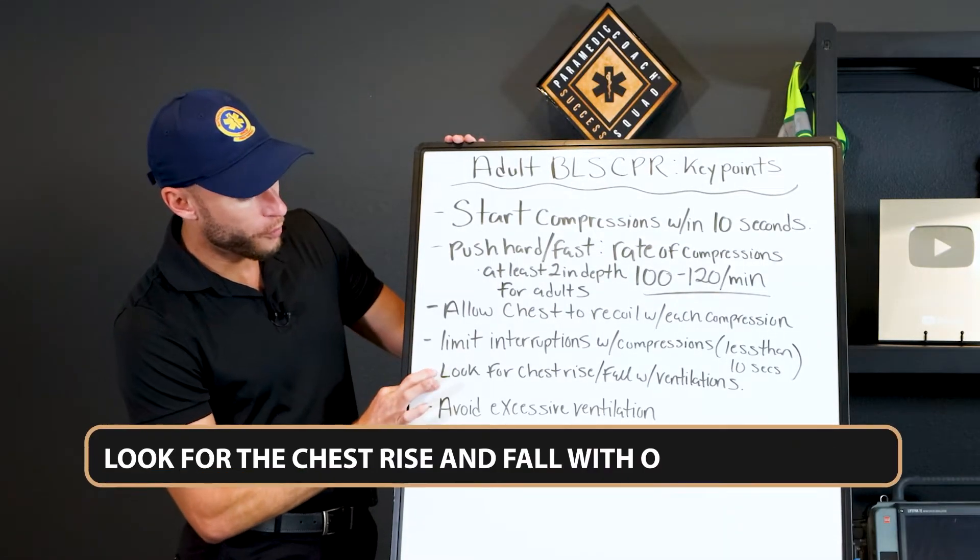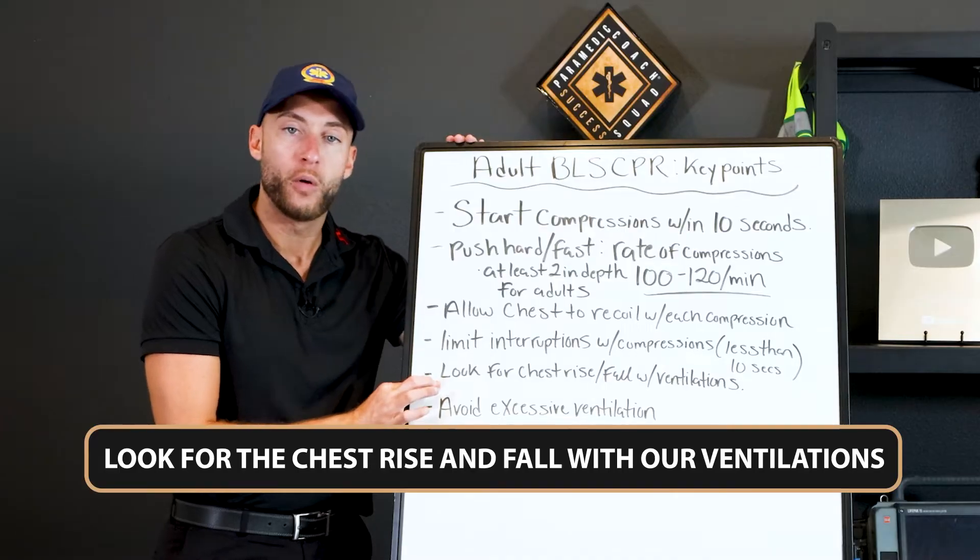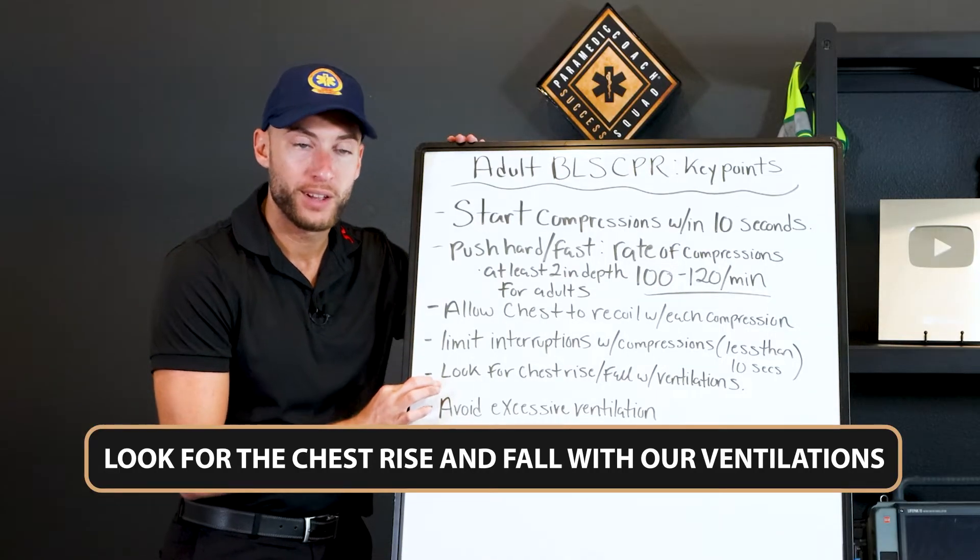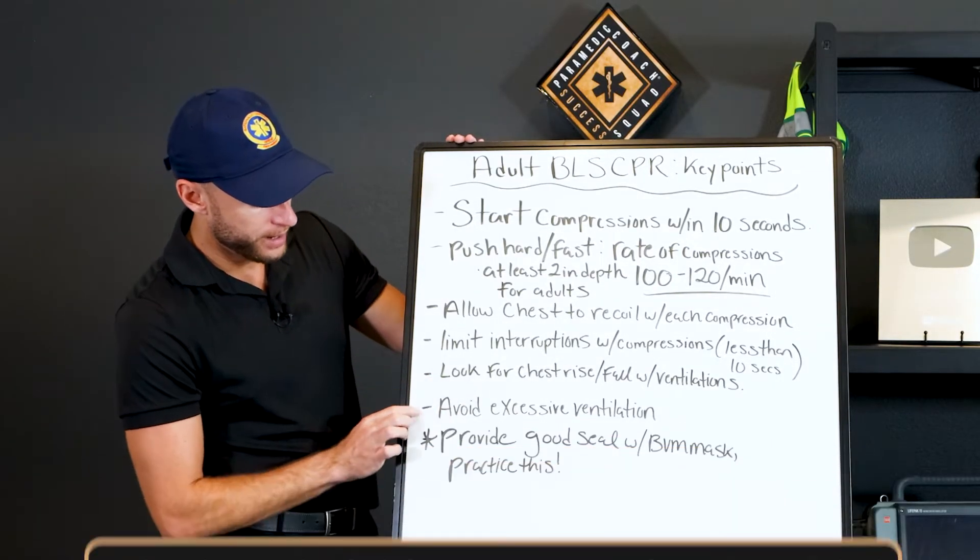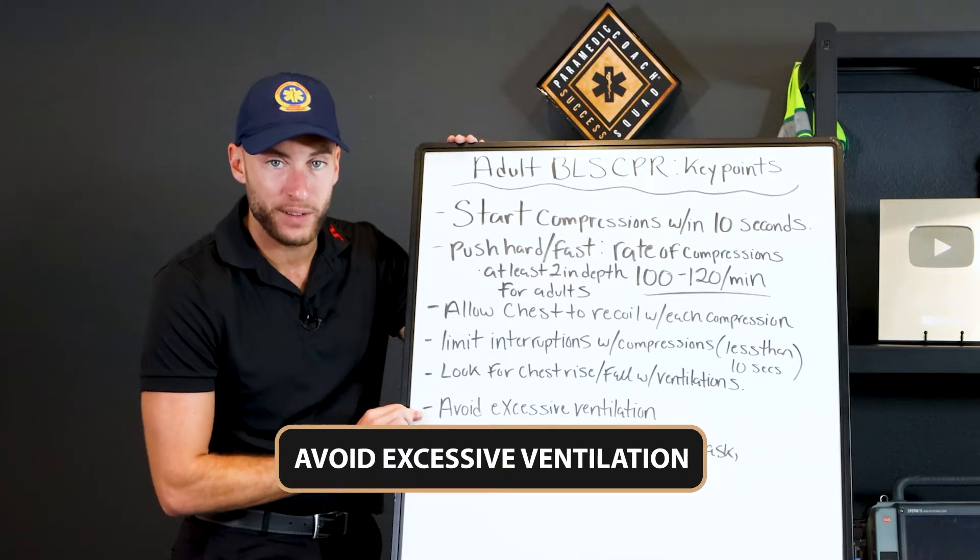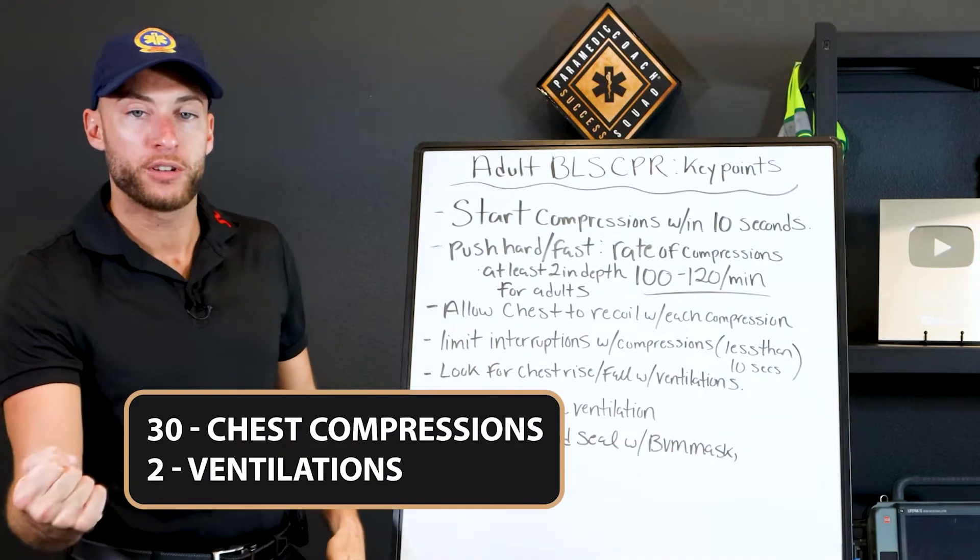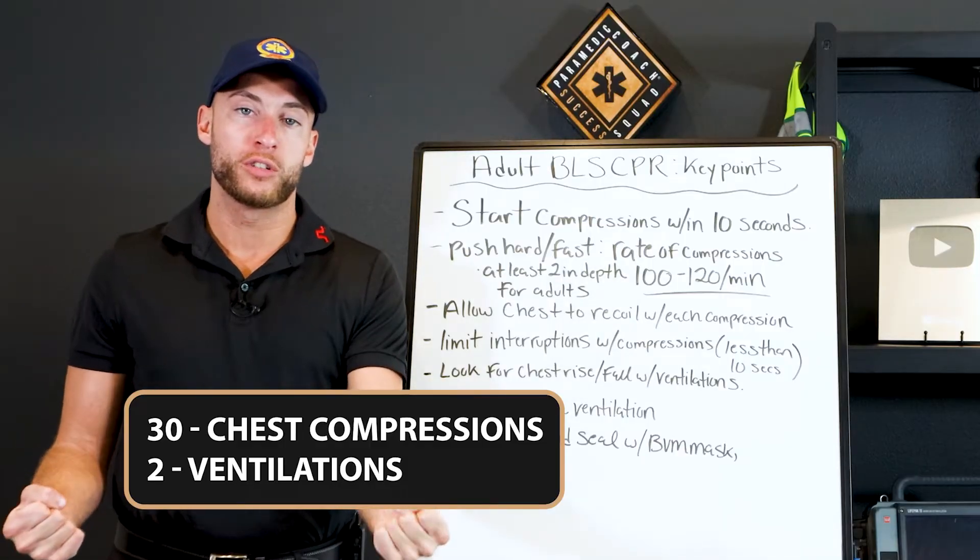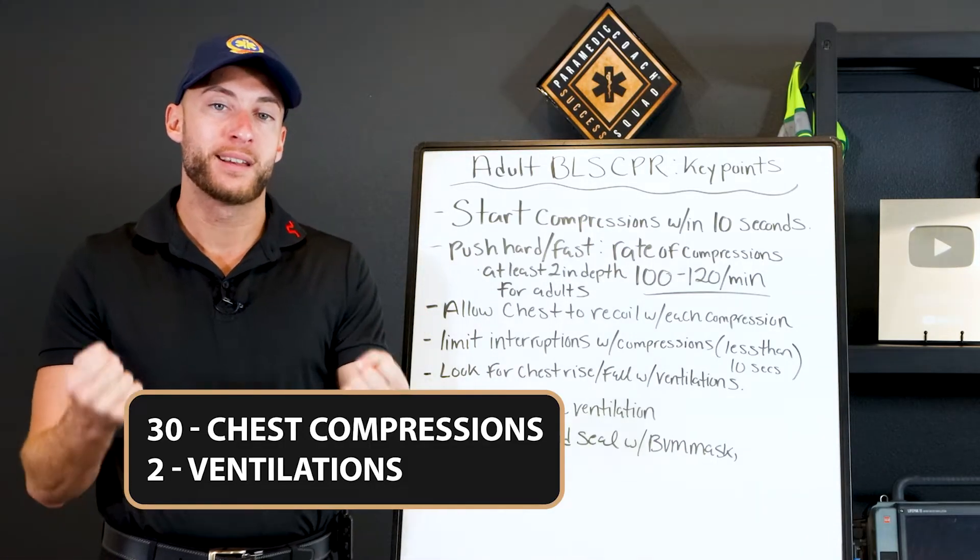Now let's move on to ventilations. So we want to look for the chest rise and fall with our ventilations. The next thing we want to do is avoid excessive ventilation. Remember, it's 30 compressions and we have 2 ventilations for adult BLS CPR.